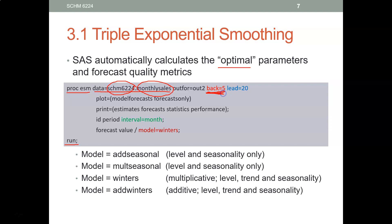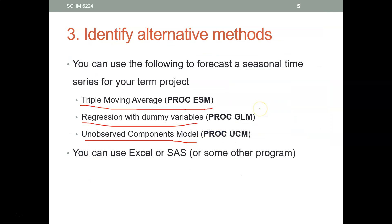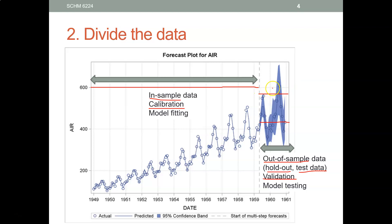The 'back' parameter specifies the holdout sample. This tells SAS that when calibrating the model, the holdout sample will be the last five observations at the end of the data set. 'Back 5' means the holdout sample is five periods long. This is how you specify your holdout sample — you tell SAS not to use the last five observations.